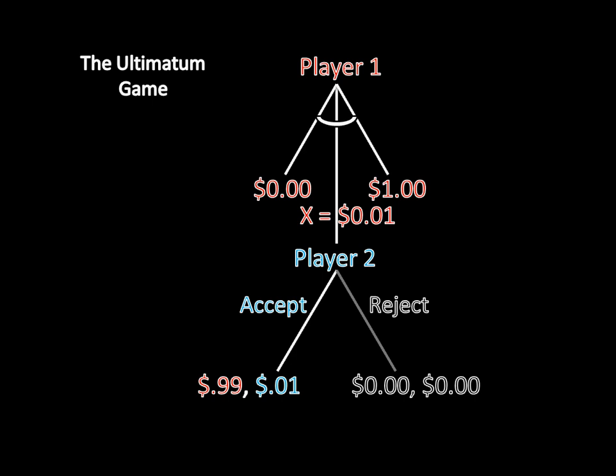Now the way the Ultimatum game is played out in the real world — if you do laboratory experiments for this sort of thing — what you see is x rarely ever equals 1 cent, and when it does equal something very low, player 2 tends to reject it. What you actually end up seeing is player 1 increasing his offer size to something much larger, which actually induces player 2 to accept.